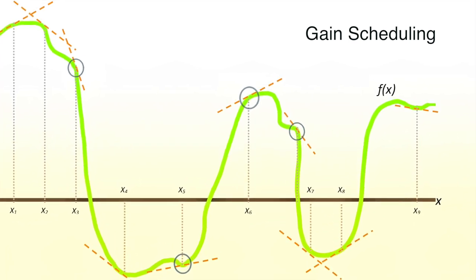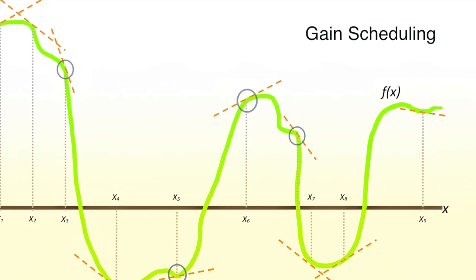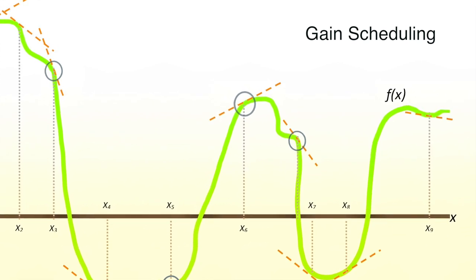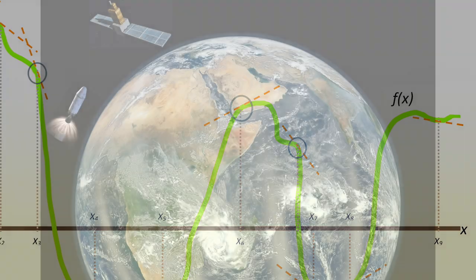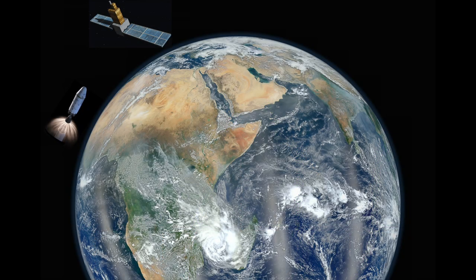Each controller gain at x1, x2, x3, and so on will activate for its specific role in the control problem. Observable variables or scheduling variables are used to determine what operating region the system is currently in and enable the appropriate linear controller to operate for the portion of the problem for which it was designed.